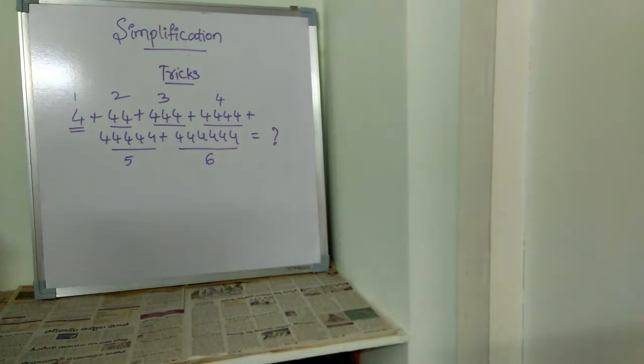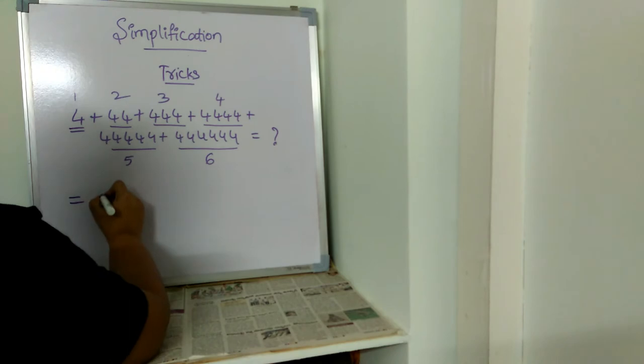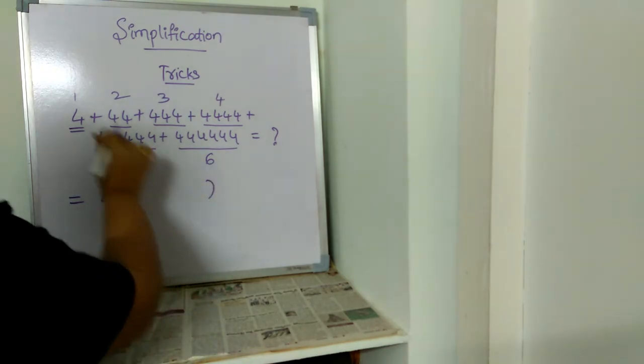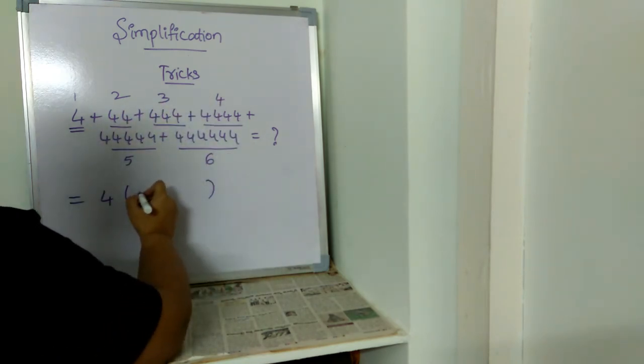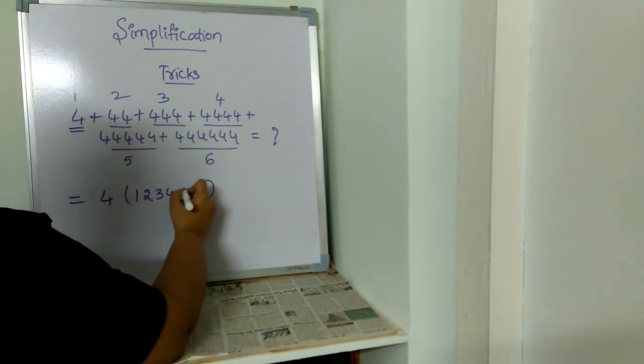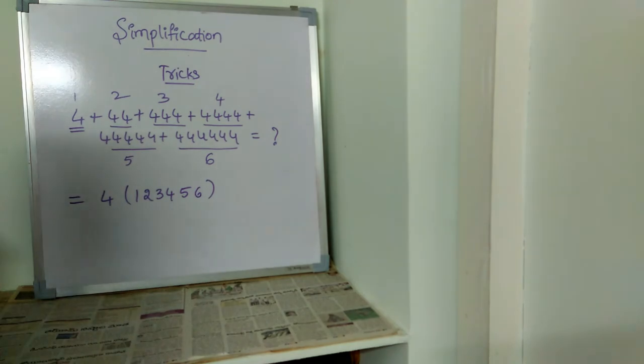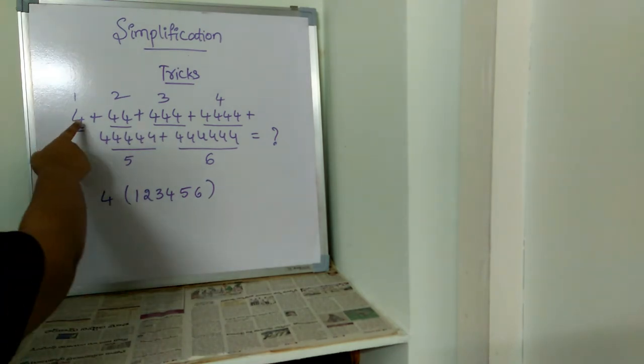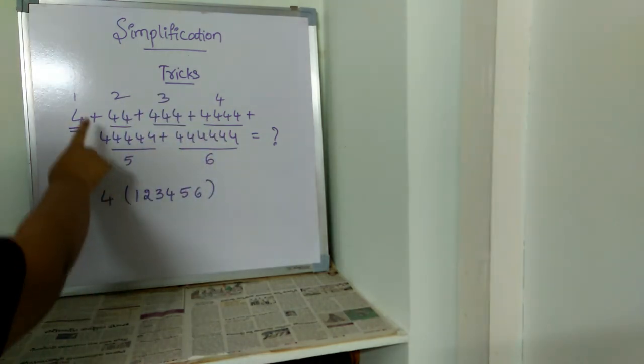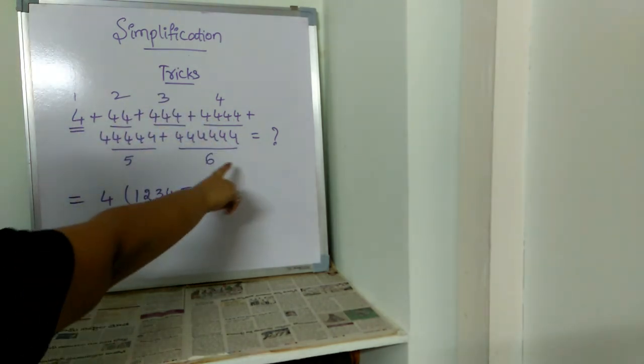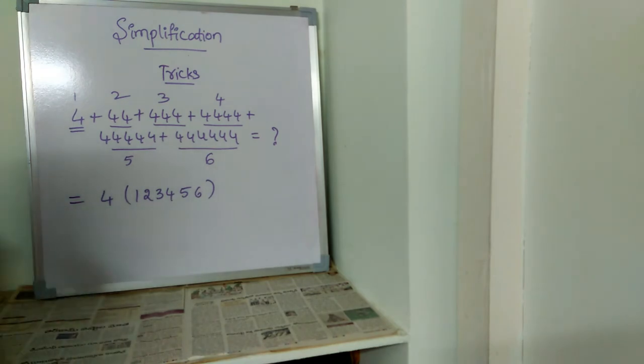The next step is to see the common term in every number, which is 4. The common term is 4. We write the common term separately, and in the braces we write the values we found: 4(123456). In every number we have 4, so we wrote 4 separately.